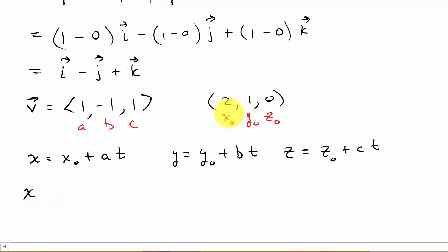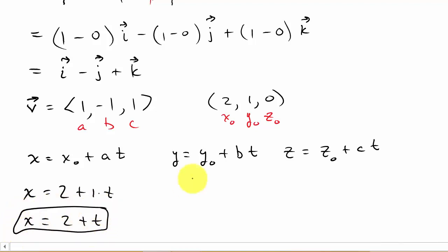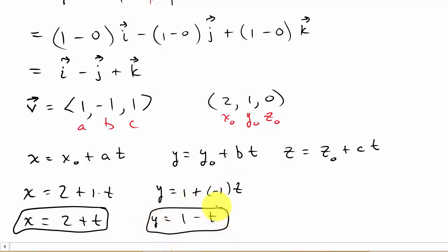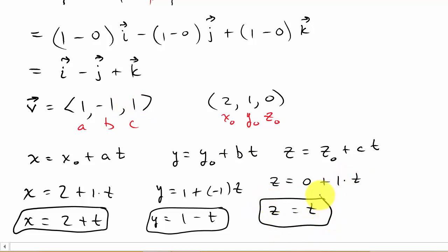So x = x naught + at, y = y naught + bt, and z = z naught + ct. x naught is 2, a is 1, so x = 2 + t. y naught is 1, b is negative one, so y = 1 − t. z naught is 0, c is 1, so z = t. And there are your parametric equations.